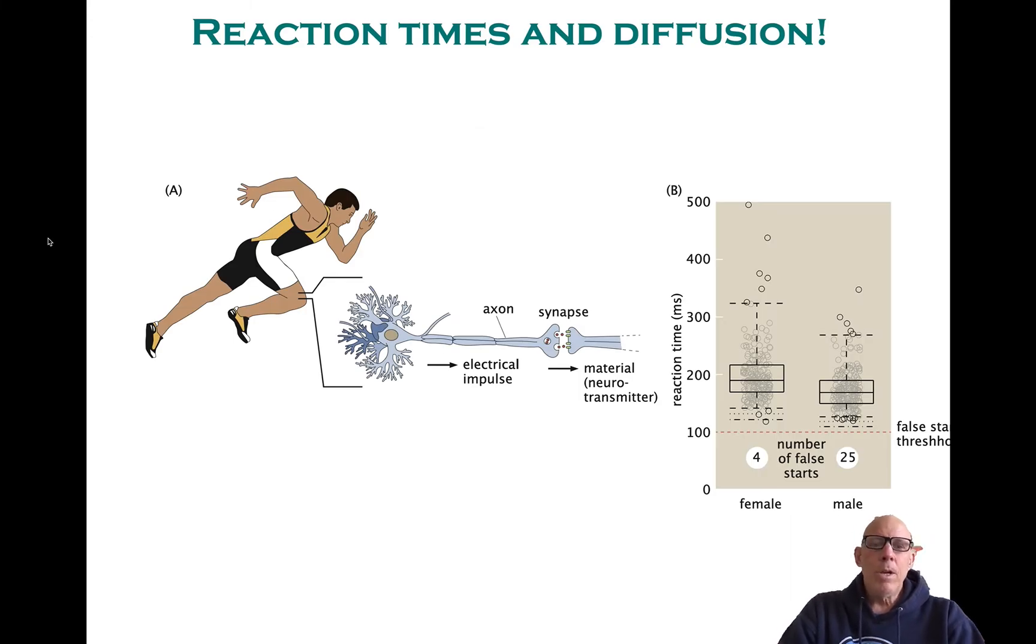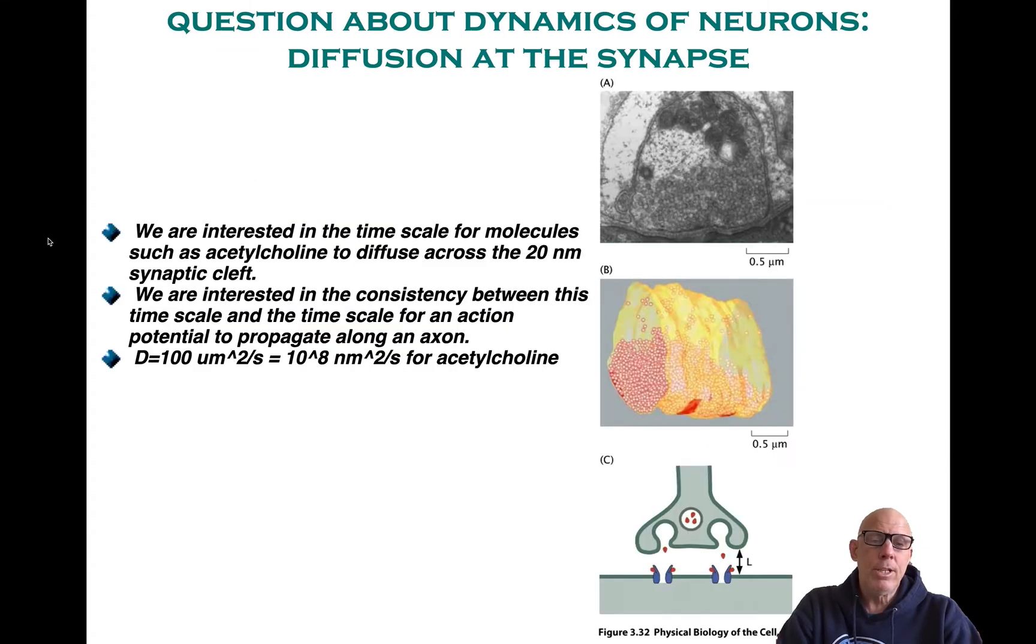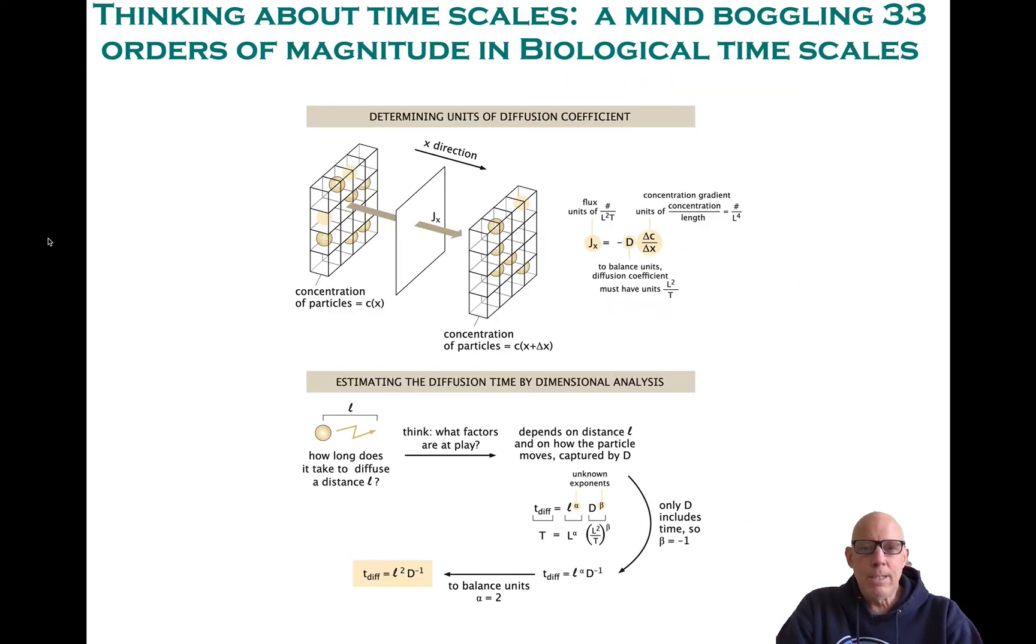So I just want to remind you that we already encountered diffusion in a rather cursory fashion in the form of two puzzles. The first one that I posed had to do with a sprinter and, for example, somebody like Usain Bolt at the start line. The moment that he hears the starting gun, there's basically the propagation of an action potential along his nerve cells. And also there's diffusion across the synaptic gap between adjacent cells, as you see here. And we were going to be or are interested in the time it takes for these neurotransmitters to move across that 30 nanometer gap.